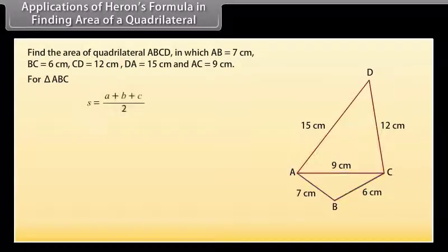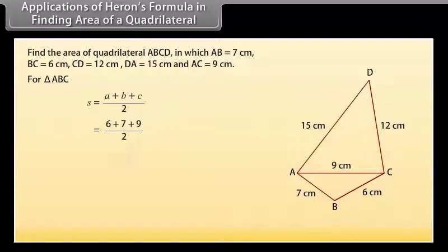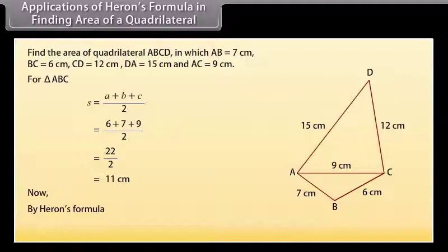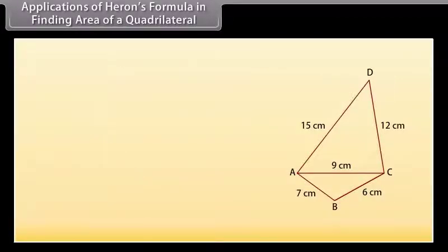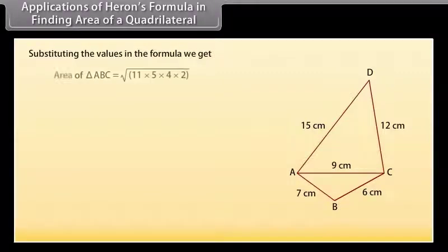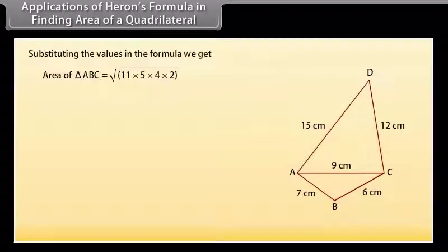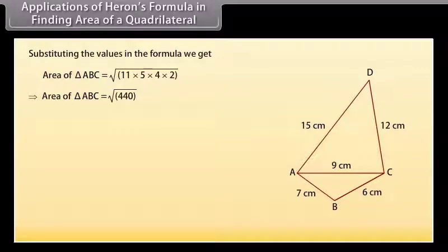For triangle ABC: S = (A + B + C) / 2 = (6 + 7 + 9) / 2 = 22 / 2 = 11 cm. Now by Heron's formula, area = √(S × (S − A) × (S − B) × (S − C)). By substituting the values, area of triangle ABC = √(11 × 5 × 4 × 2) = √440 ≈ 20.99.